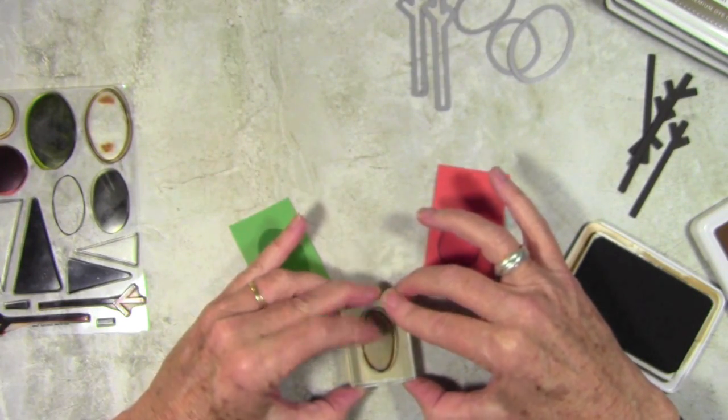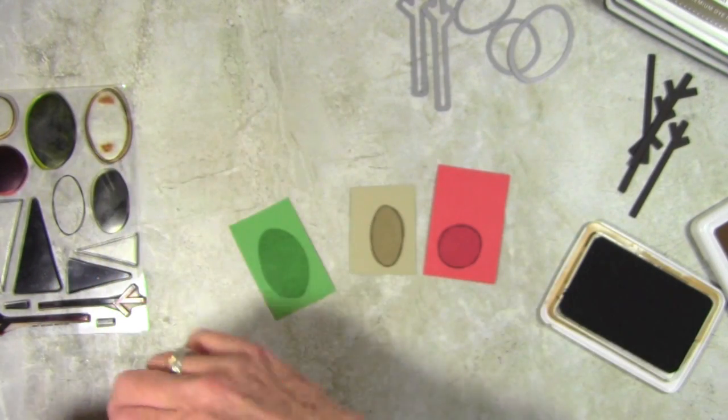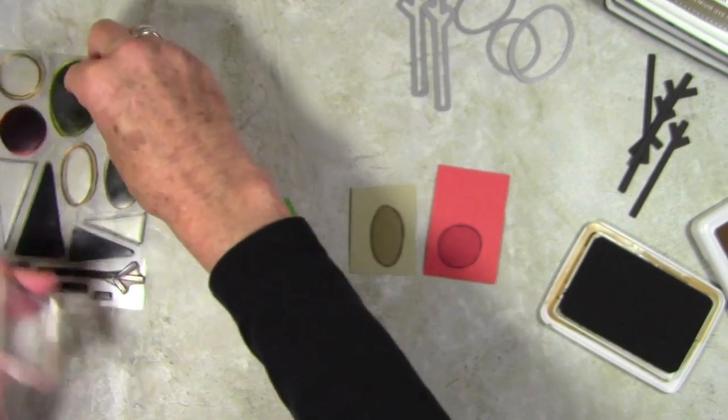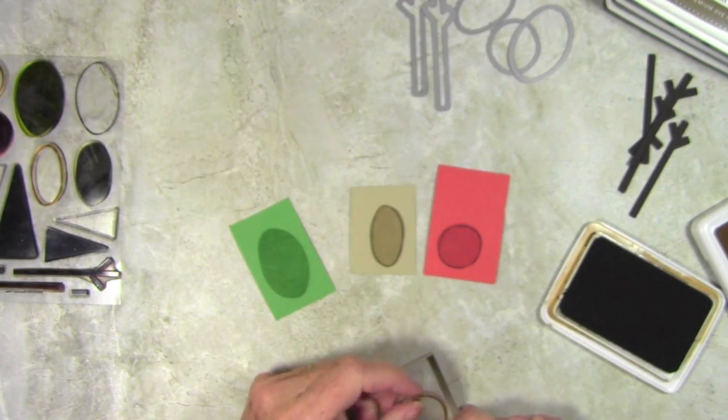As you know, the Simon Says Stamp ink reacts to the paper and it takes about 10 or 15 minutes for the ink to finally soak in and smooth out. I'll explain why I'm using the Archival Ink and I hope that I can make some sense for you.